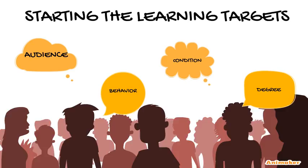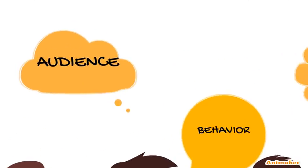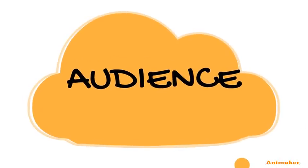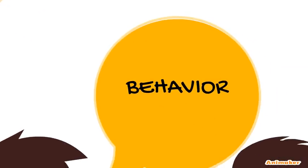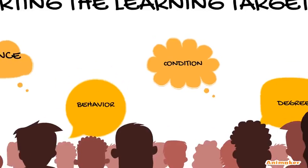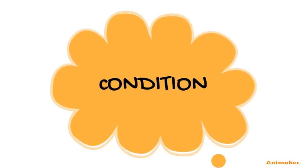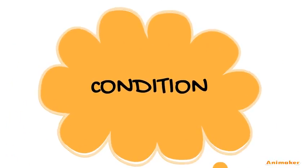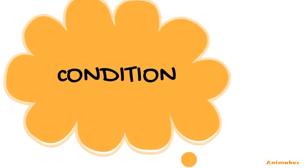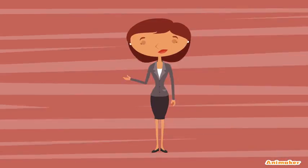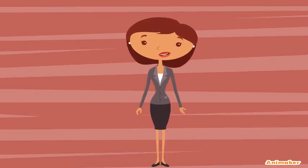Starting the learning targets. Audience: individuals that will benefit from the outcome. Behavior: describes what the students will do. Condition: the materials that will be available or unavailable when the outcomes are assessed. And degree: the standard used to measure whether or not the outcome has been met.